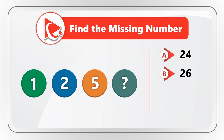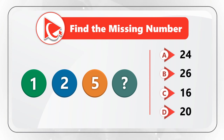The last circle has the missing number represented by a question mark. Calculate and select the final answer from choices: A is 24, B is 26, C is 16, and D is 20. Take a close look to see if you can find the answer.